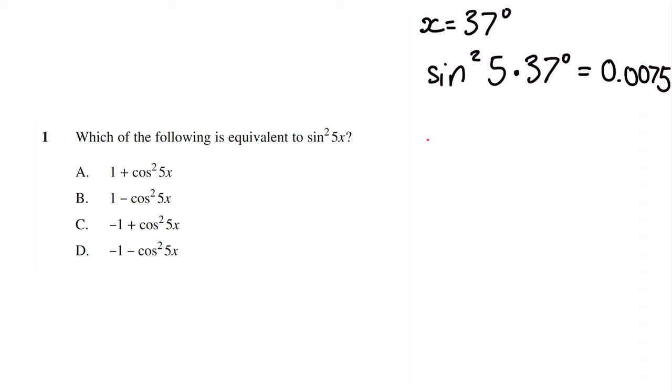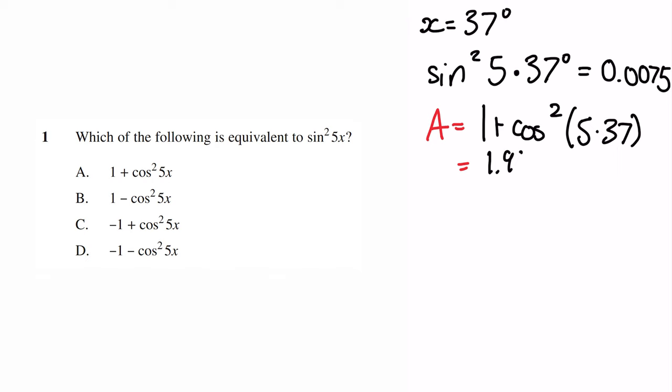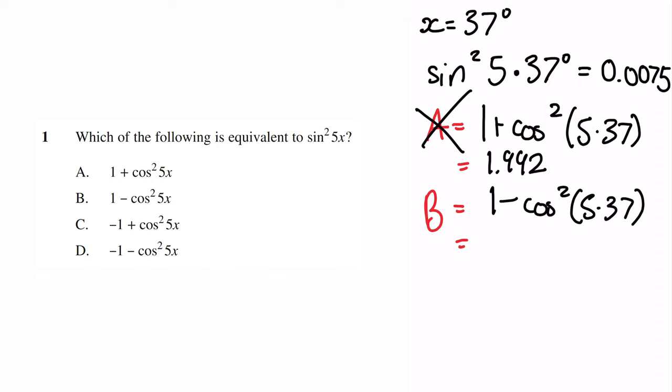Now let's see what happens if I sub 37 into option A: 1 plus cos squared of 5 times 37, which equals 1.992. So it is not A because it is not equivalent to what we got for sine squared 5x. Next we try B: 1 minus cos squared of 5 times 37, and substituting that into the calculator we get 0.0075. Therefore B is our answer.